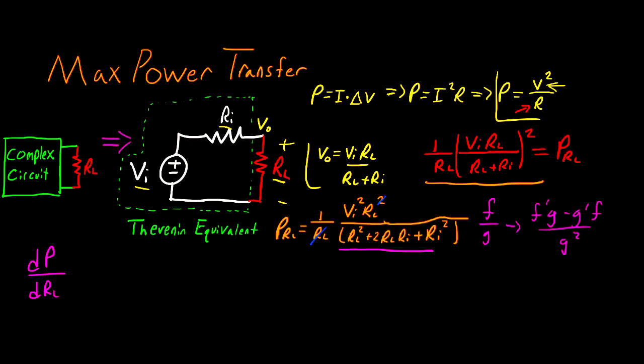So f prime in this case is going to be the derivative of VI squared multiplied by RL. So we're going to be left with VI squared. Now this is multiplied by g and that's our denominator and we can write that in unchanged. So we'll have RL squared plus 2RL RI plus RI squared. So we'll say minus the derivative of our denominator which is going to be 2RL plus 2RI and the derivative of RI squared is going to be zero. So that's it for g prime and we have to multiply that by f. So that's going to be multiplied by VI squared RL.